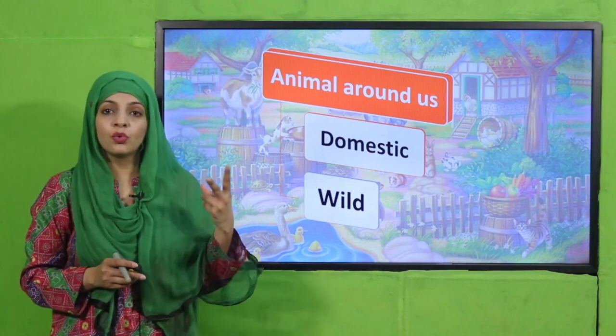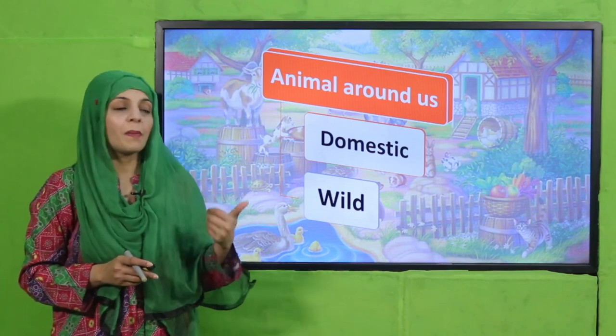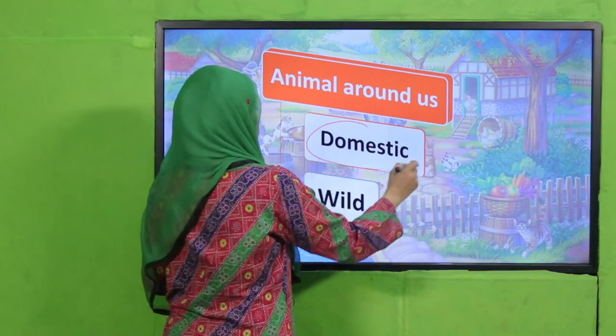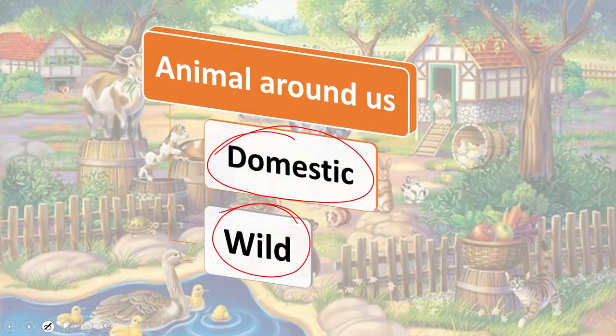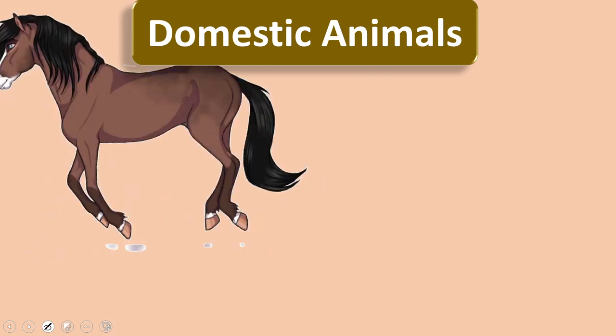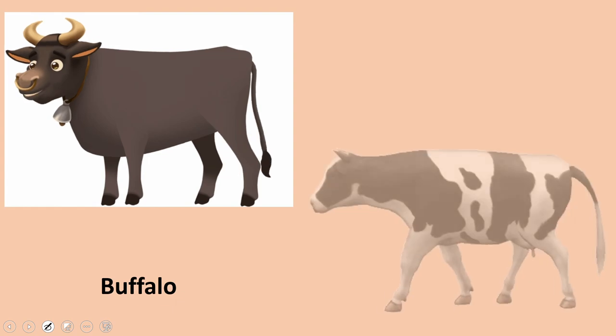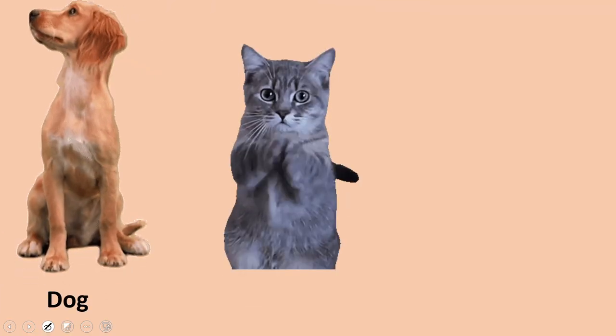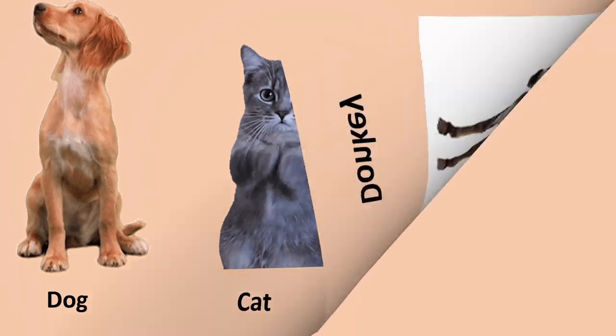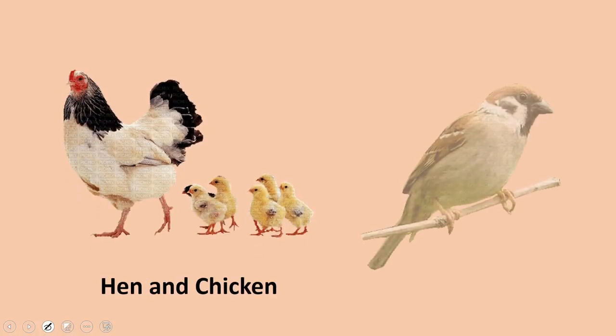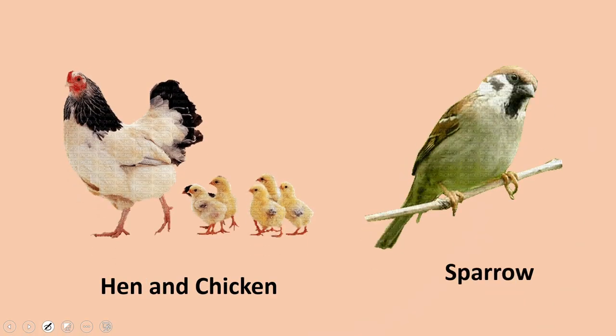Animals around us are of two types: domestic animals and wild animals. Domestic animals are like horse, squirrel, cow, buffalo, dog, cat, donkey, chicken, hen, and sparrow. These all are domestic animals. Cows and buffalos provide us with food. We can also keep them as pets. They also give us eggs and milk.